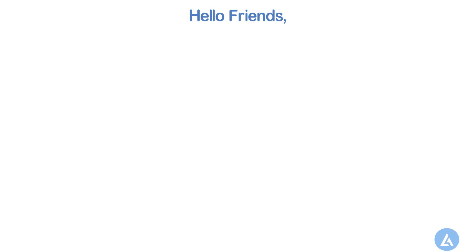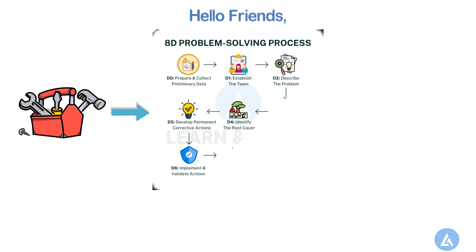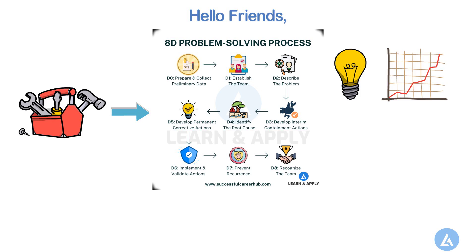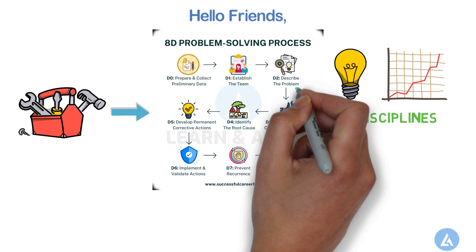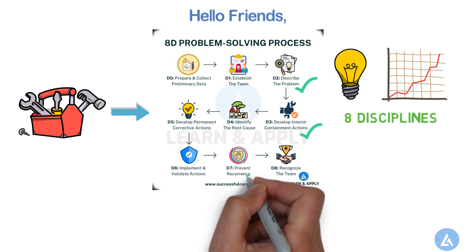Hello friends, welcome back. In this video, we are going to learn one of the important tools that is widely used in industries, i.e. 8D. 8D Problem Solving Methodology is an industry standard approach for corrective action and continuous improvement in Lean Six Sigma. The name 8D represents the eight disciplines in problem solving, coming from the eight structured steps that guide teams through identifying, addressing and preventing reoccurring issues.